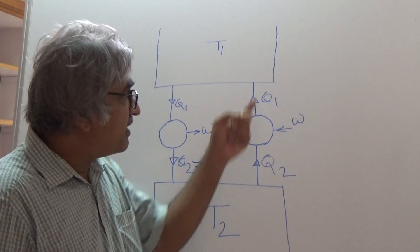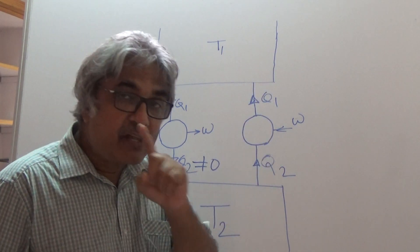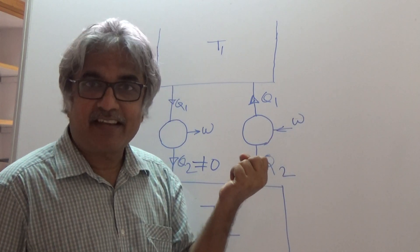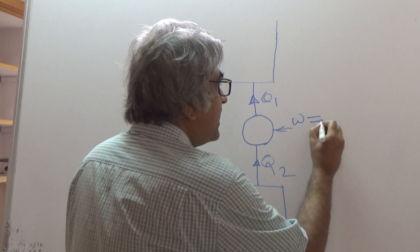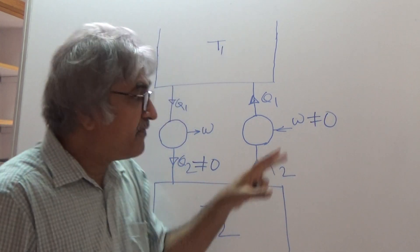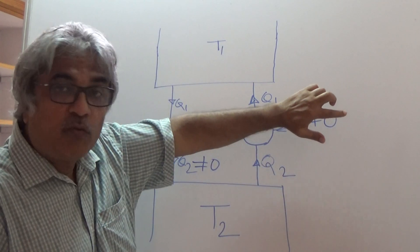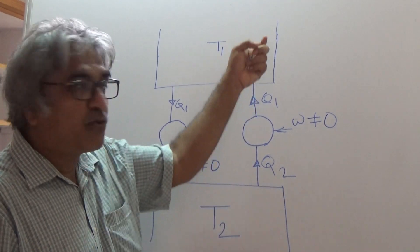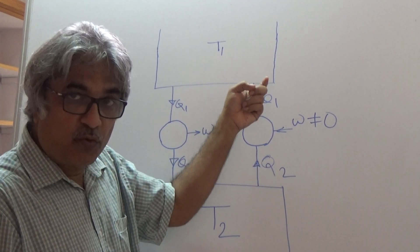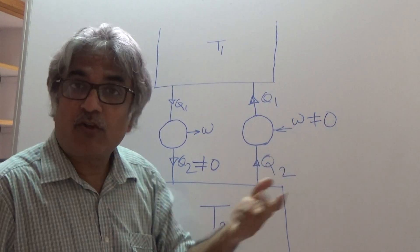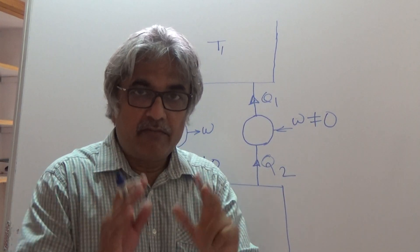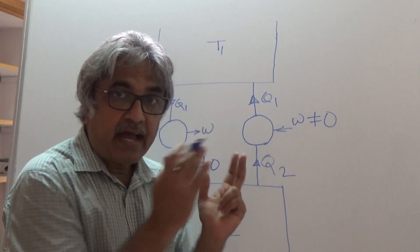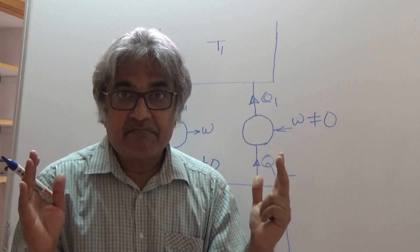What is the Clausius statement saying? If heat is to be lifted from low temperature to high temperature, this cannot happen unless some work is input. So W cannot be zero. If W is zero, heat would flow spontaneously from low temperature to high temperature — Q2 would equal Q1 — and that is not possible. That is what Clausius stated.